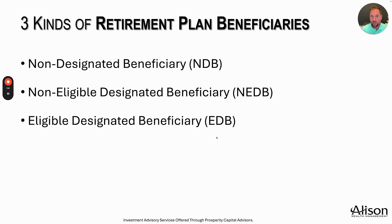Under the SECURE Act, there are three types of plan beneficiaries. If you've inherited money, you're going to fall into one of these three designations. The first is a non-designated beneficiary or NDB. The second is a non-eligible designated beneficiary, or NEDB. And the third is an eligible designated beneficiary, or EDB.